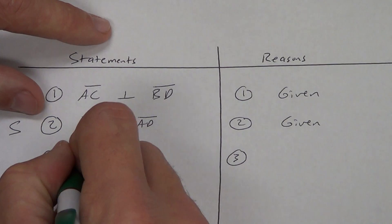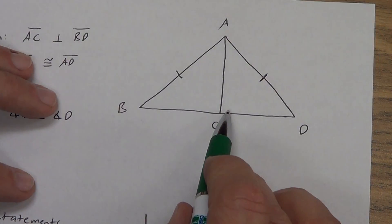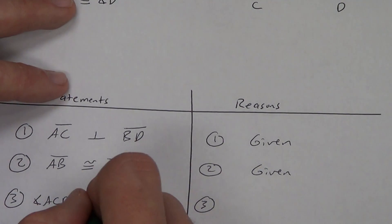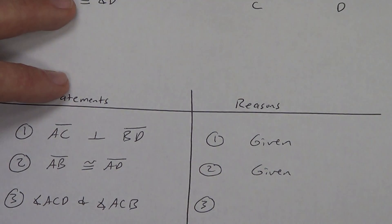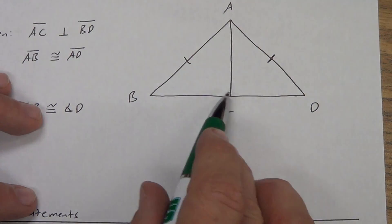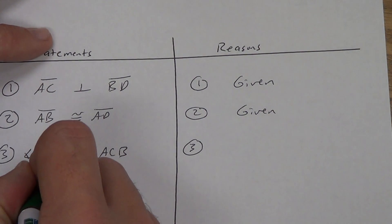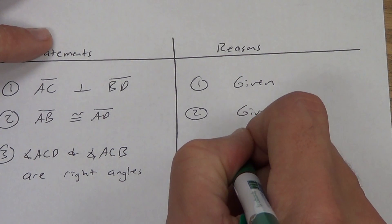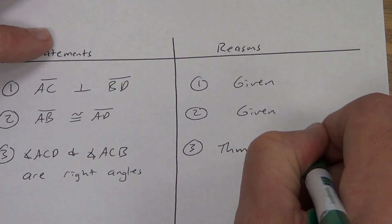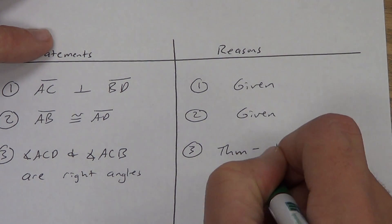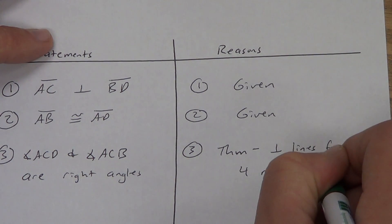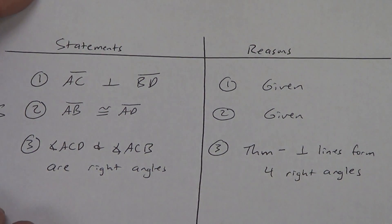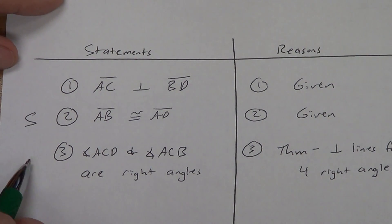What do we know about perpendicular lines? Perpendicular lines form right angles. We've got some right angles. We have to be specific with three letters: angle ACD — that's this one right here, vertex in the middle — and angle ACB, that's this one over on this side, vertex in the middle — are right angles. That comes from the theorem that says perpendicular lines form four right angles. We only listed two of them because that's all we really needed.